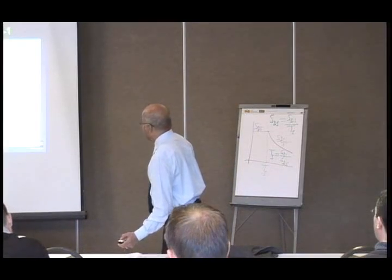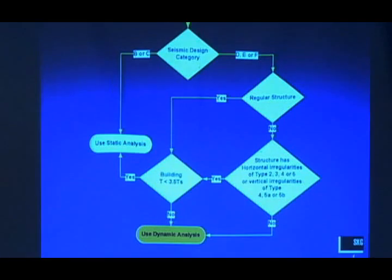We explain this table through this flowchart, which is easier to follow. If your structure is in design category B or C, you can use static analysis, period. If your structure is in D or F and it's a regular structure, then as long as the period is less than 3.5 times the transition period, you can do static analysis. If it is equal or larger, you have to do dynamic analysis.